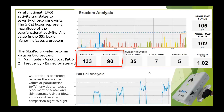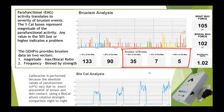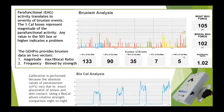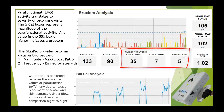The bins underneath the bruxism analysis graph represent the number of events detected by strength. The first two bins at 10% and 25% of the waking calibration are relatively weak bursts — 133 and 90 events including RMMA — not something we're terribly concerned about. The next three bins, with values of 35, 7, and 5, represent true clenches or grinds. In this case, 35 + 7 + 5 = 47 clenches or grinds. This patient's frequency is high. Their magnitude is average — just over 1 — but their frequency is definitively elevated.